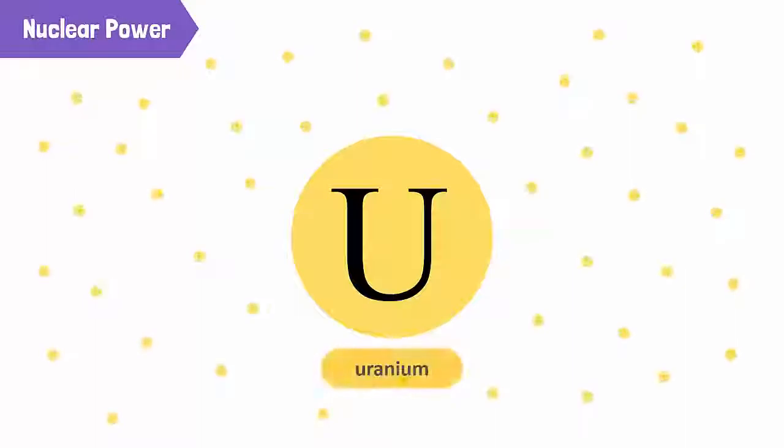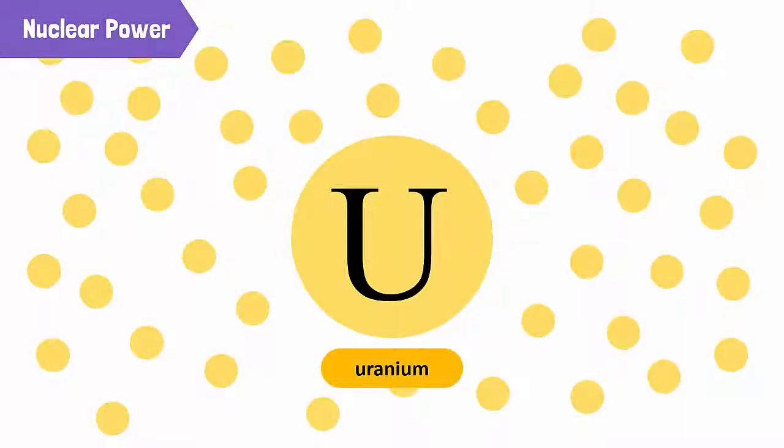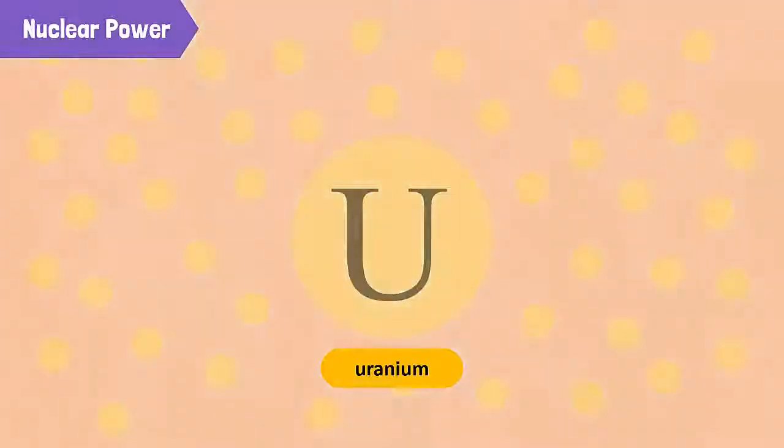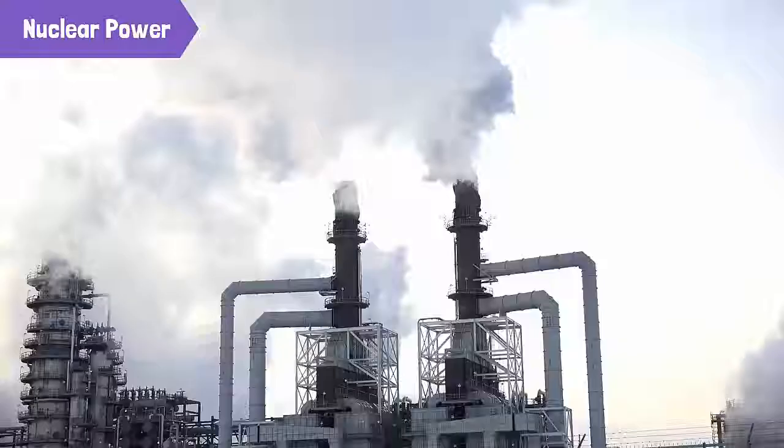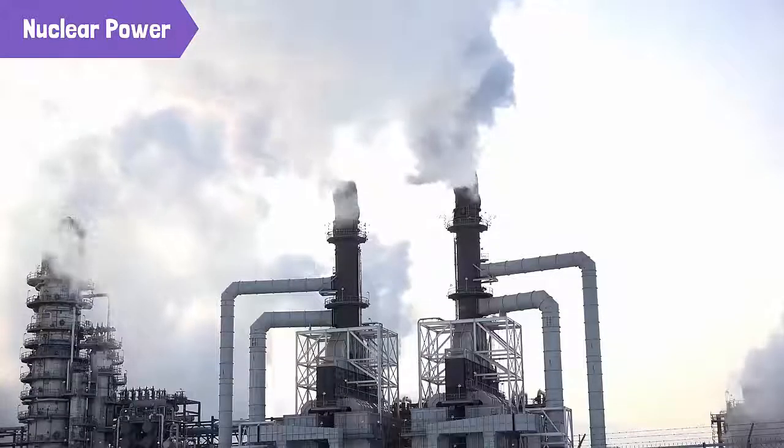Heavy elements, like uranium, are split into lighter elements. During the process, a large amount of heat is produced, which is used to heat water. Again, this produces steam, which is used to generate electricity by a steam turbine.